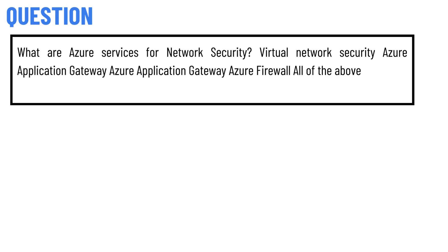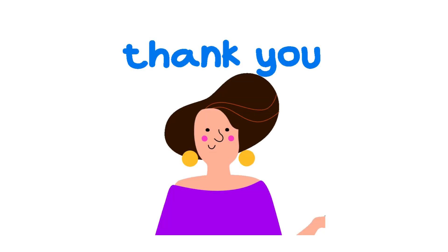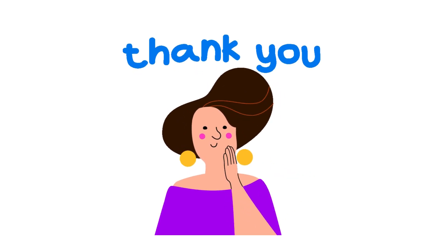Our today's question is: What are Azure services for network security? The options are: Virtual network security, Azure Application Gateway, Azure Firewall, or All of the above. The correct answer to the question is All of the above.